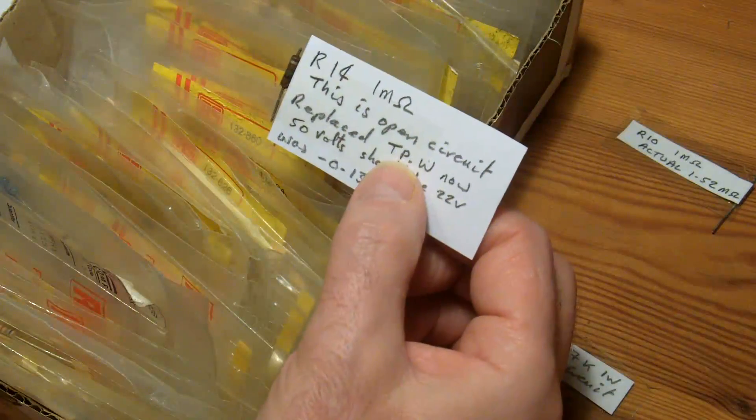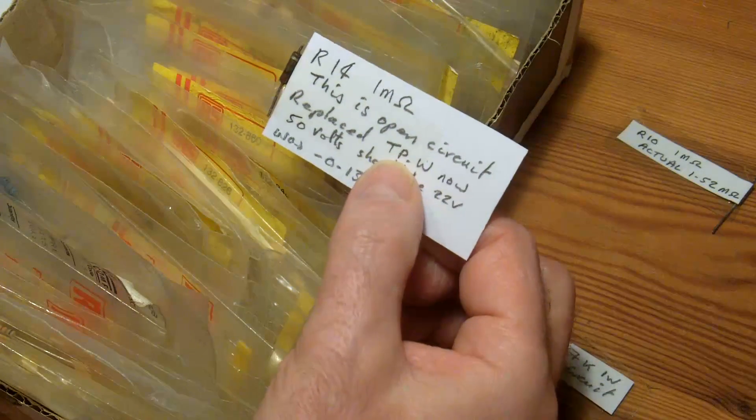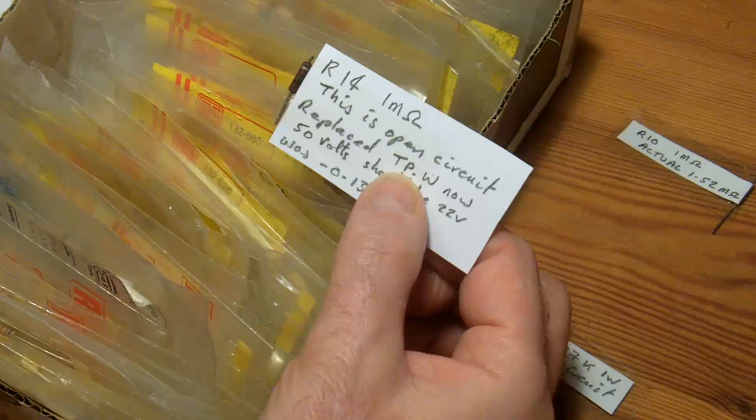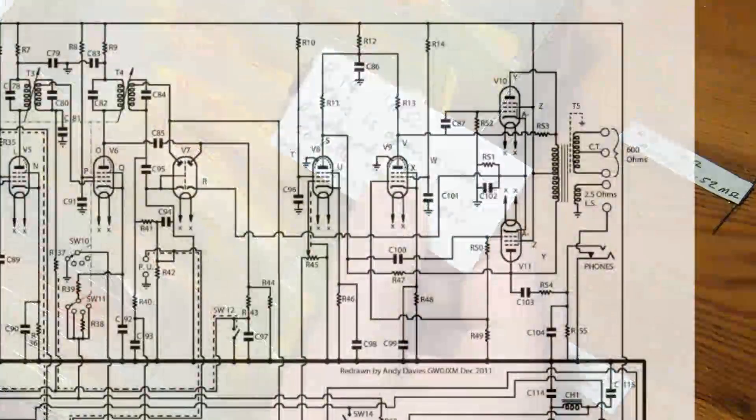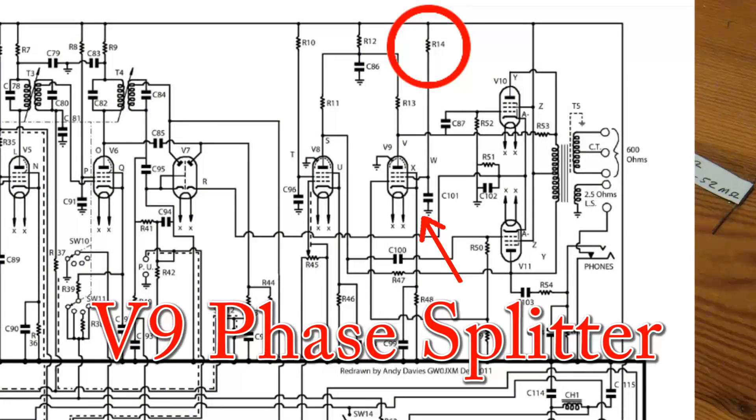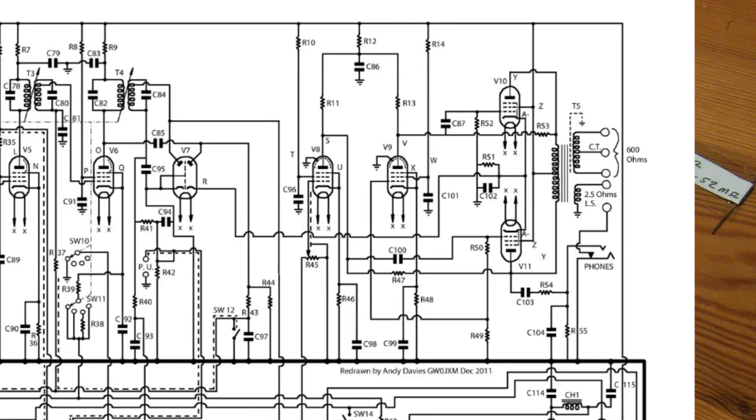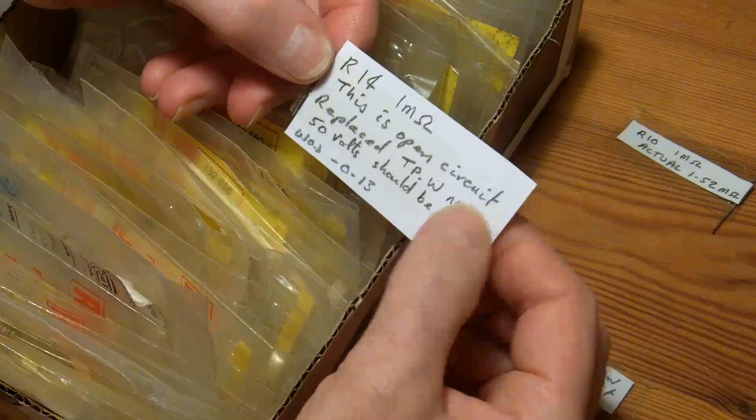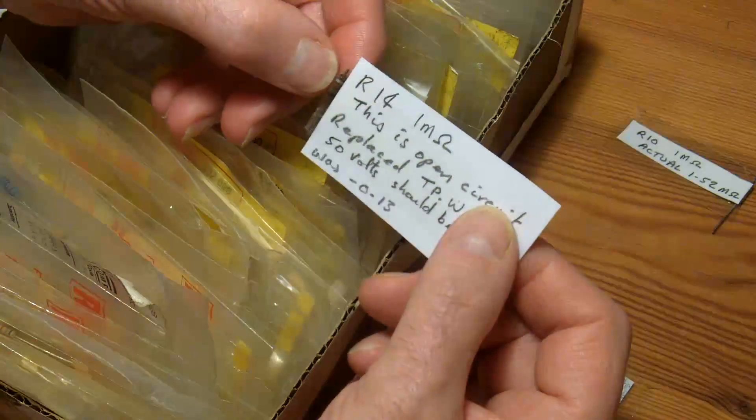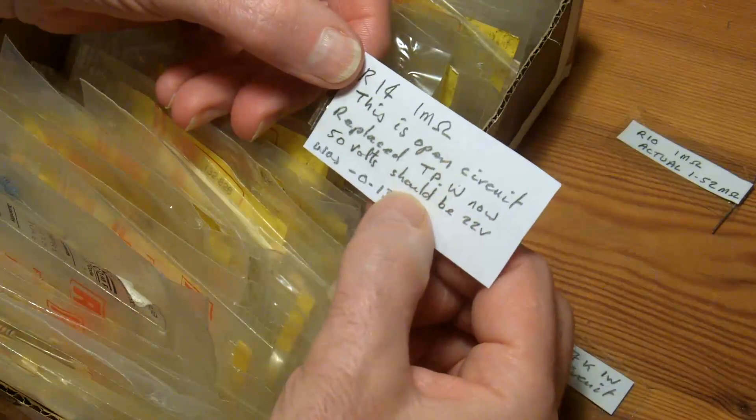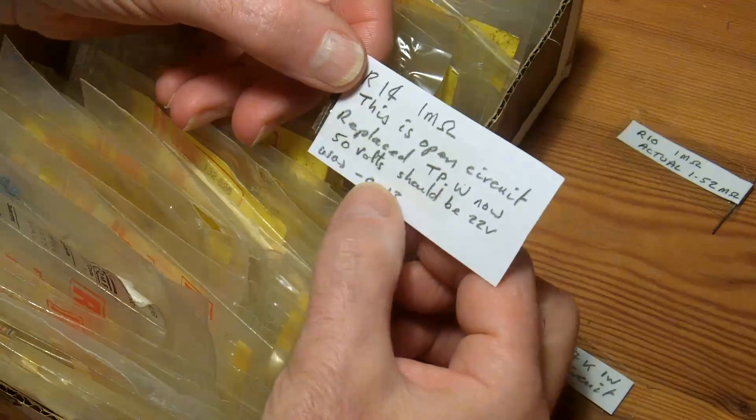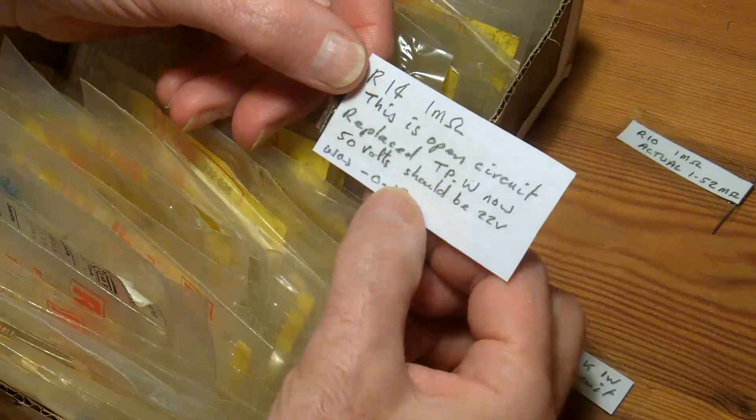This is R14, the resistor for the screen of V9, the phase splitter. This is a 1 meg resistor and it's actually open circuit. I've replaced it and now I've got 50 volts on that test point.